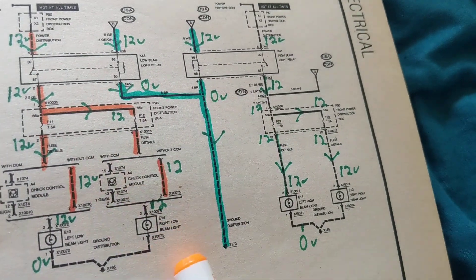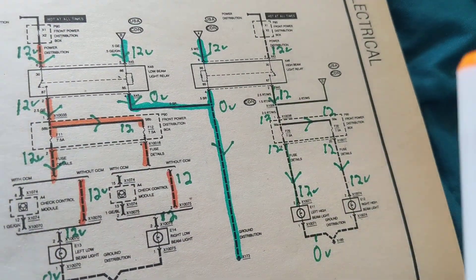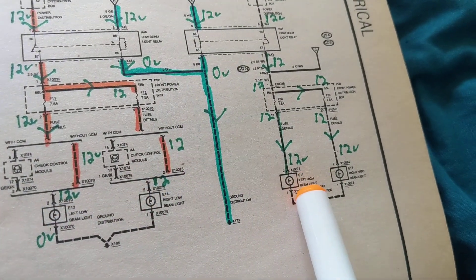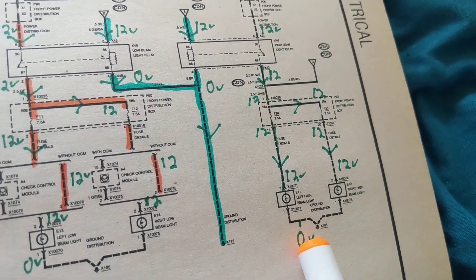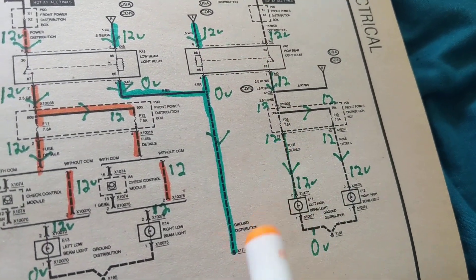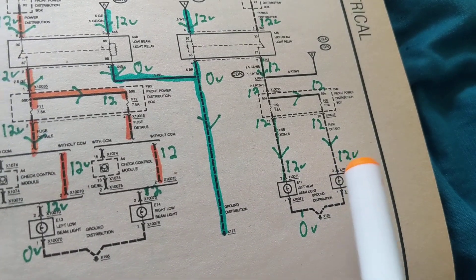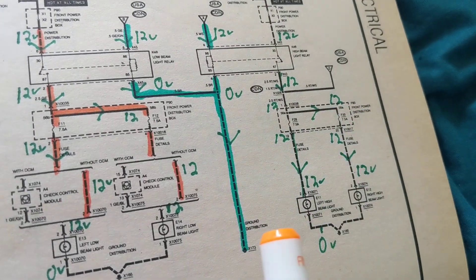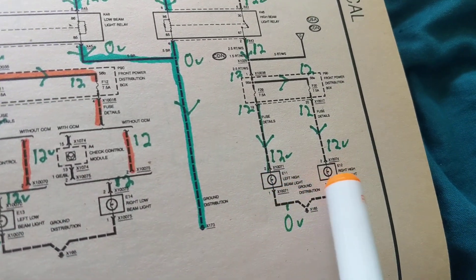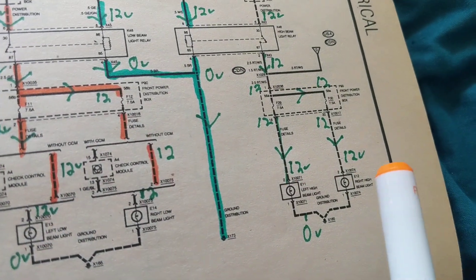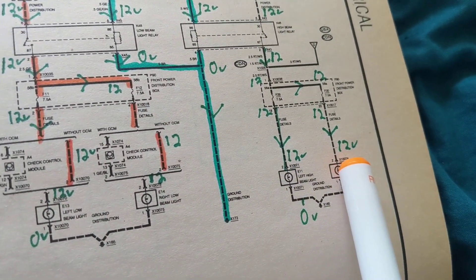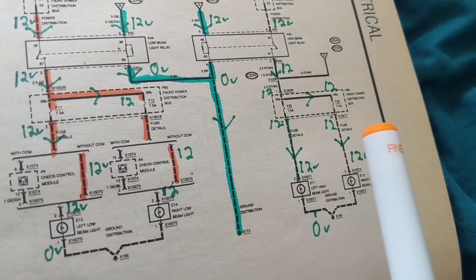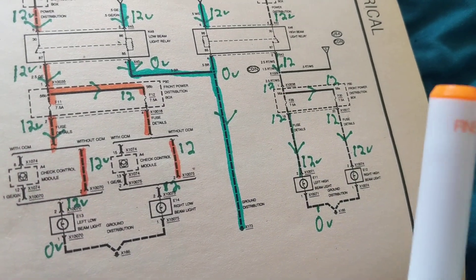Number one — always remember this: the load is always going to have 12 volts. The fuel pump is going to have 12 volts, whether it's the auxiliary or the main. The starter motor is going to have 12 volts. The light bulbs — whether right or left, doesn't matter — are going to have 12 volts. Parking lamps, headlamps, license plate lamps: 12 volts. Remember that.